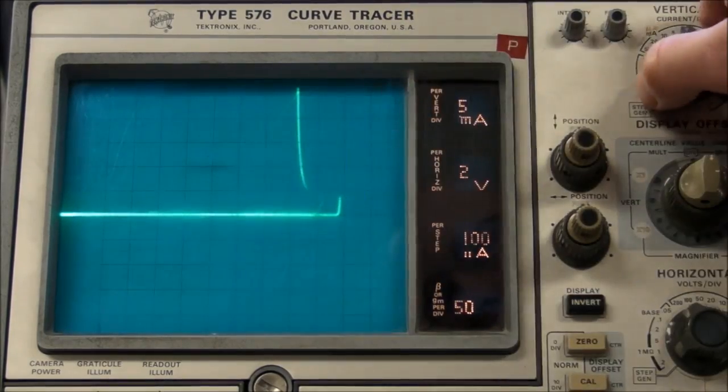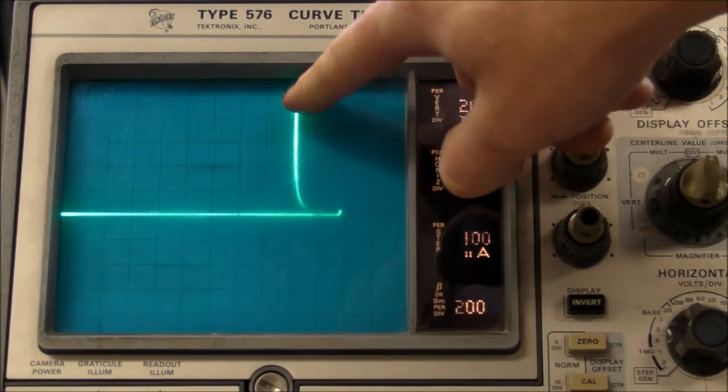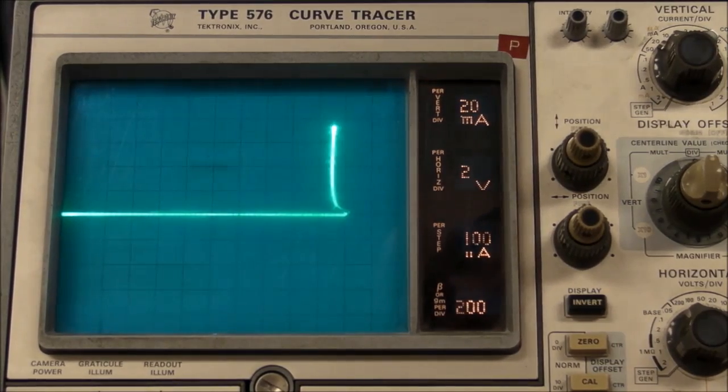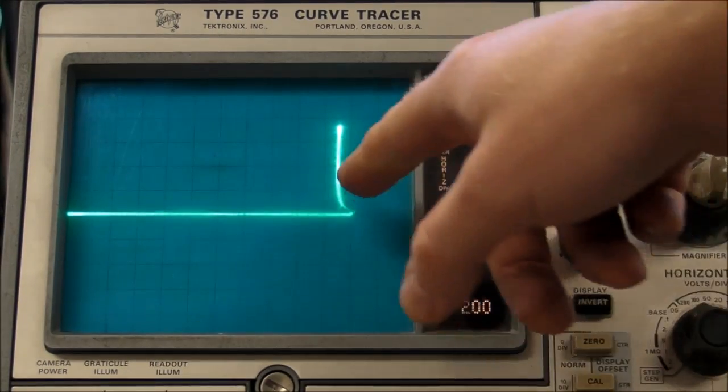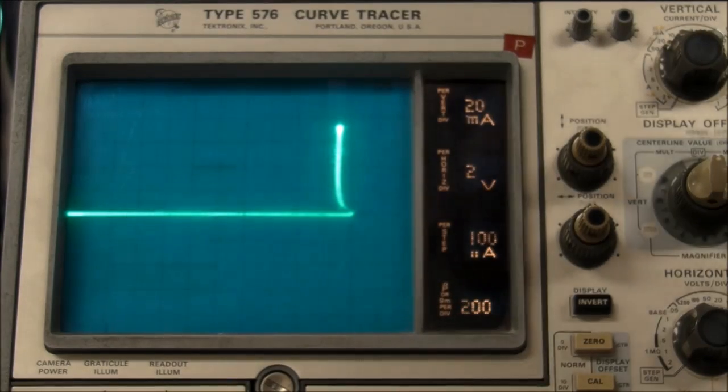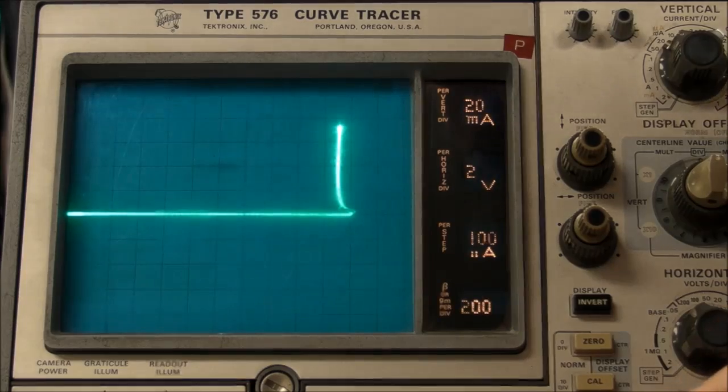And then it kind of stabilizes on four volts. And the 3904 has that same region, the same negative resistance when it's reverse biased, but it's just not quite as exaggerated as it is for the other.